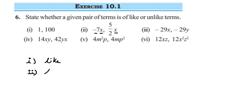The next one: we have -29x and -29y. Though the numerical coefficient is the same, we have to consider the algebraic factors — the variable part. One is x and one is y, so they are unlike terms. We should not consider the numerical coefficient; we should take only the variable part and check if the variables are the same.